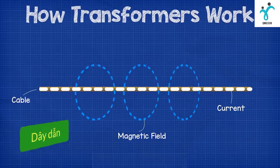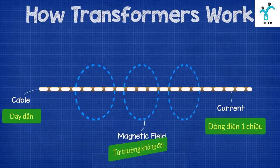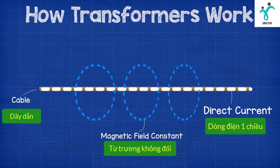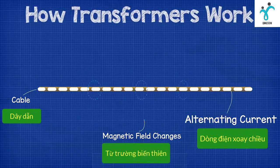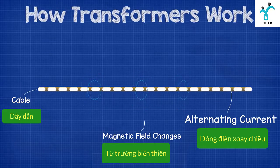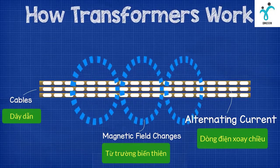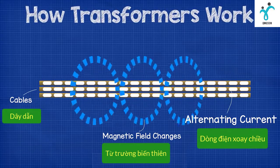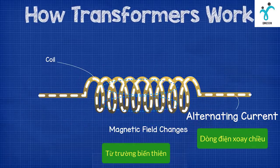As current flows through a cable it will emit a magnetic field. If we pass DC current through the cable the magnetic field will remain constant, but if we pass AC current through the cable then the magnetic field will increase and decrease in strength and change polarity as the current changes direction. If we place multiple cables together and pass current through them, the magnetic fields will combine to create a stronger magnetic field. If we then wrap the cable into a coil the magnetic field will become even stronger.